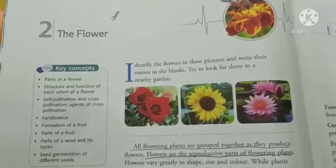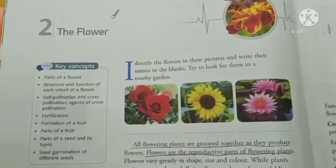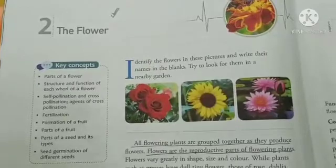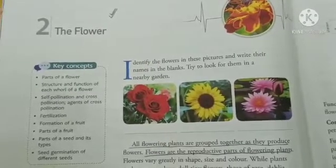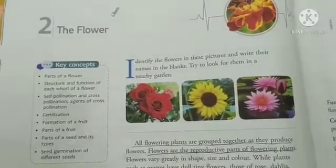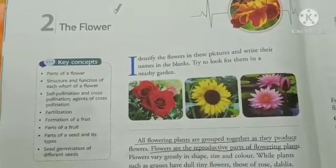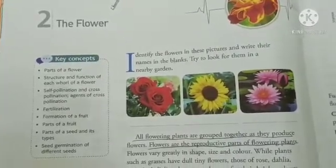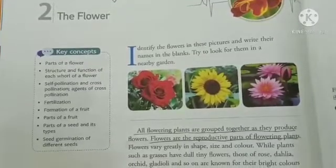Good morning students. Today I will be starting with the second chapter of biology, the flower. The book I am referring here is Living Science Biology for class 6th ICSC. The author of the book is D.K. Rao and the publication is Ratnasagar publication. This whole chapter is all about flowers.